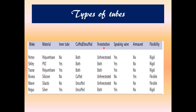Types of tracheostomy tubes can be classified based on make material, whether it has an inner tube, whether it is cuffed or uncuffed, fenestrated or not, whether it has a speaking valve, whether it is armored or not, and its flexibility. For example, the Portex tracheostomy tube is made of polyurethane, has no inner tube, comes in cuffed and uncuffed versions, and can be fenestrated or not.